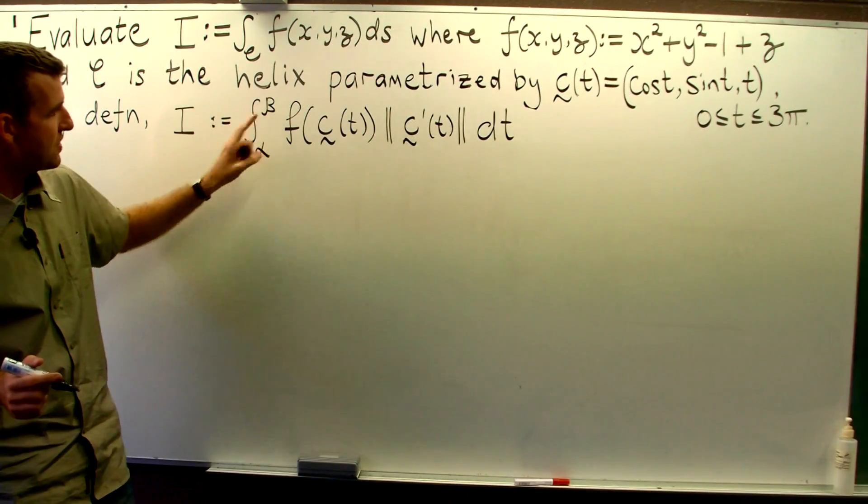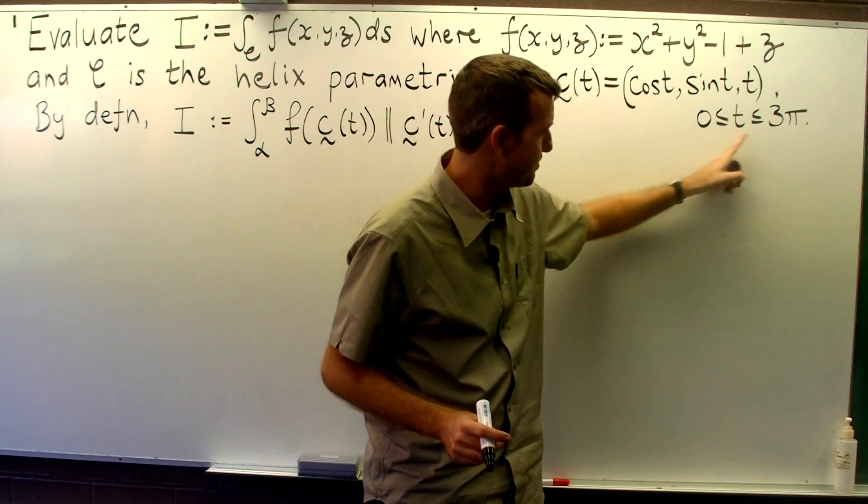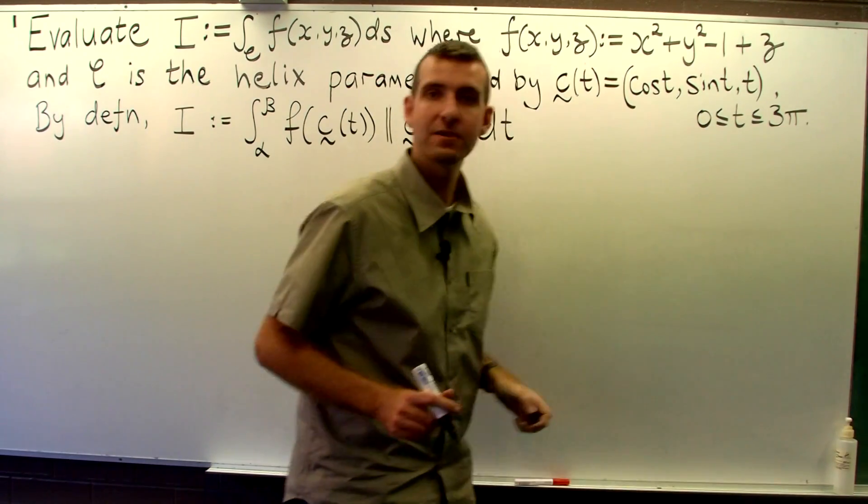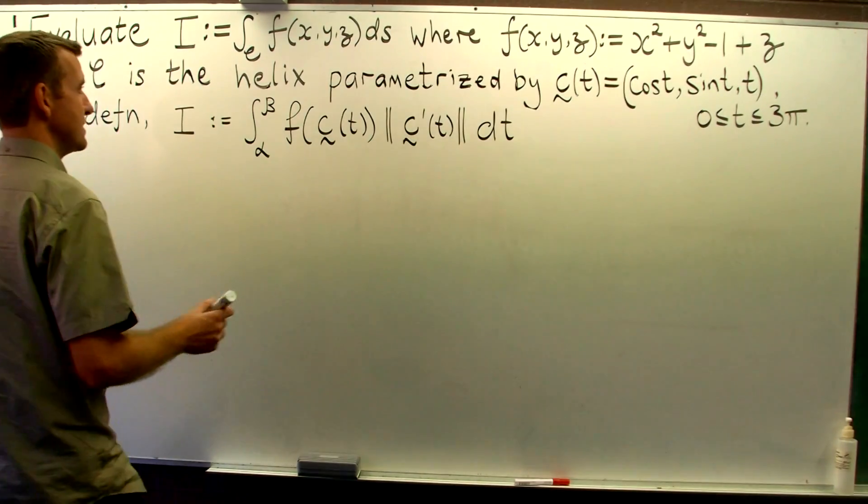Here, the alpha and the beta are the upper and lower bounds on t. So here the alpha would be zero and the beta would be three pi.